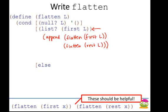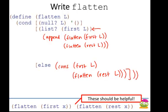If the first of the list is not a list itself, then all I need to do is cons that element onto the flatten of the rest of the list. If it's not a list, that means I don't have any more flattening to do on that first element, and I'm done.